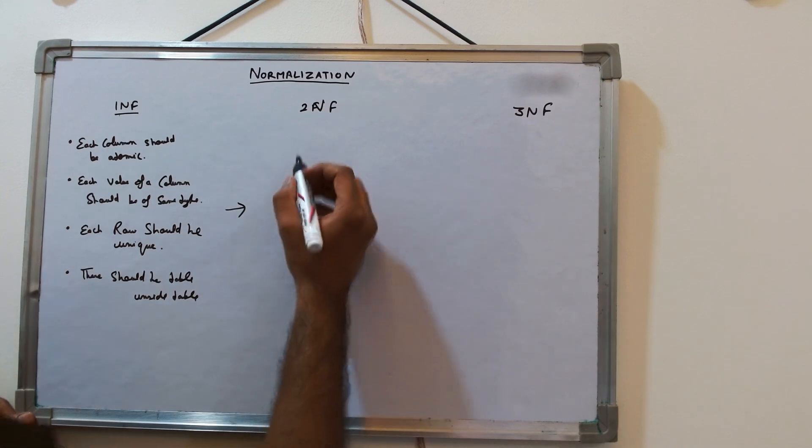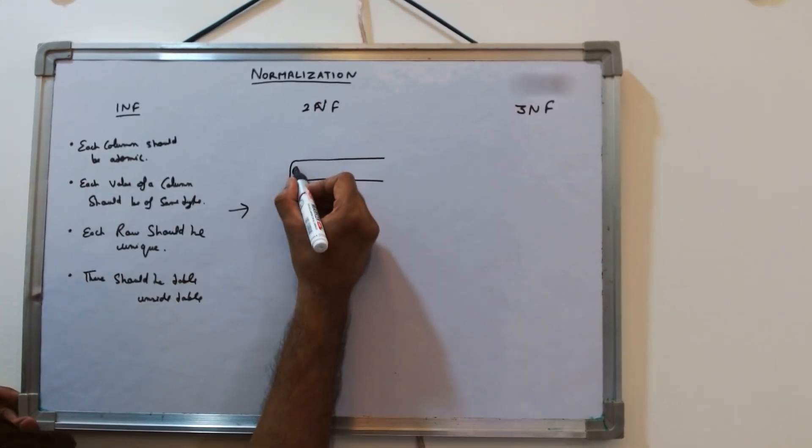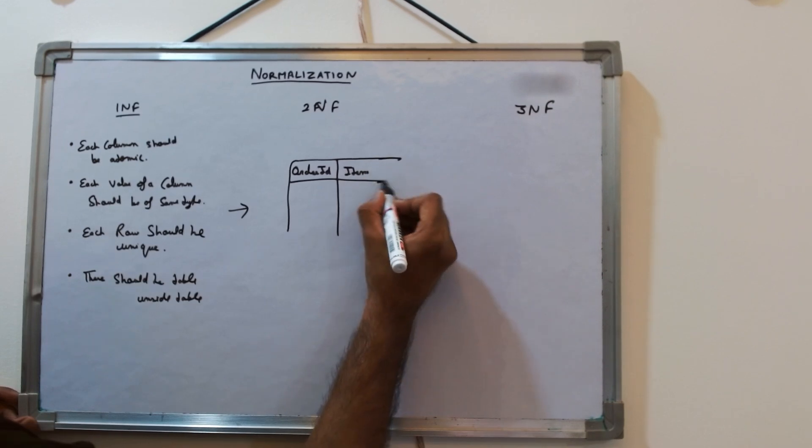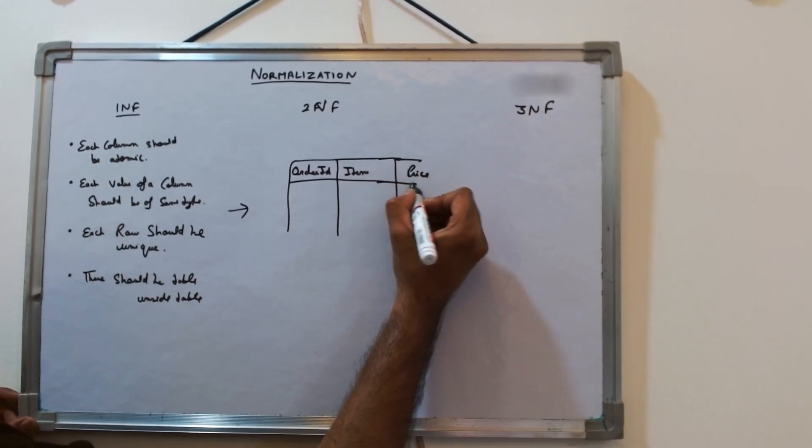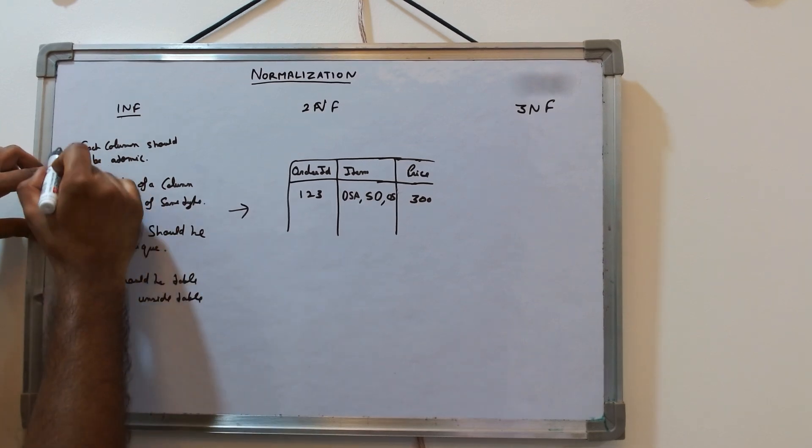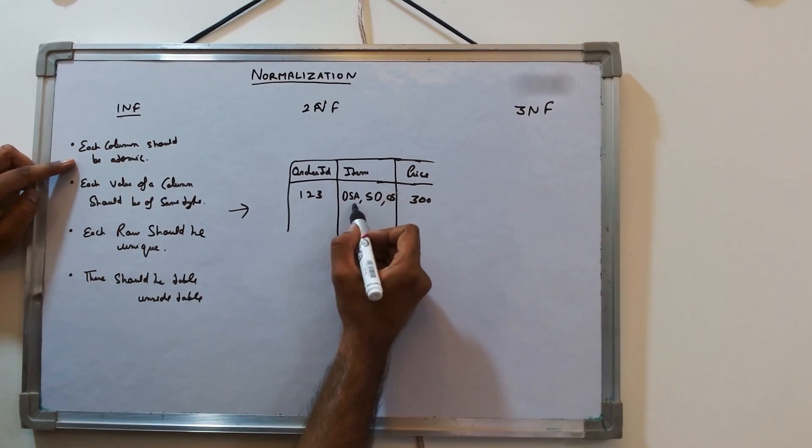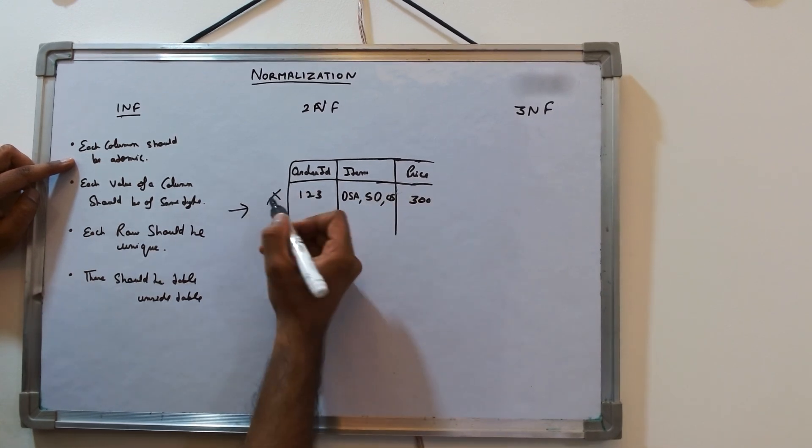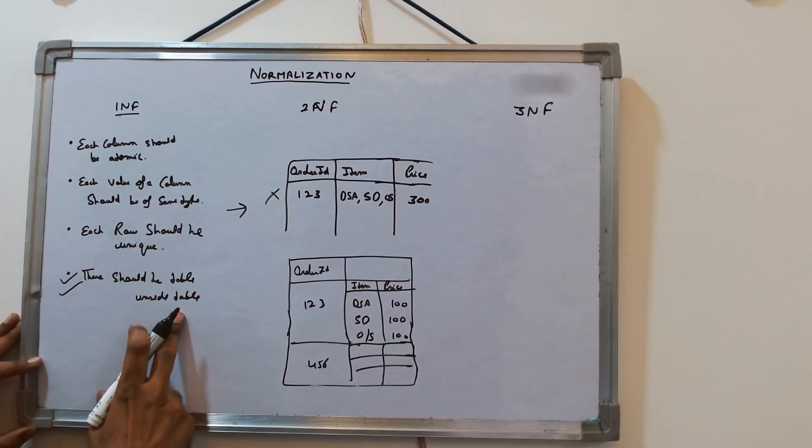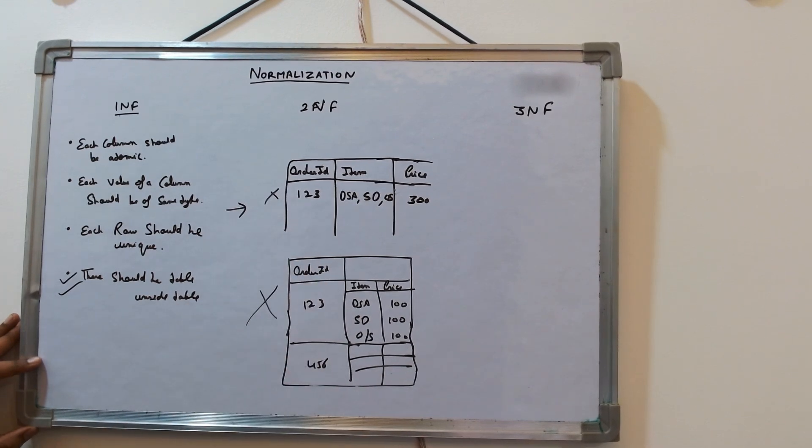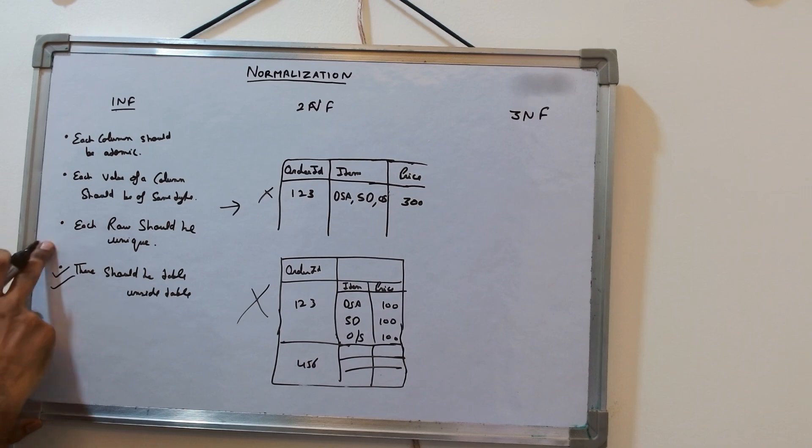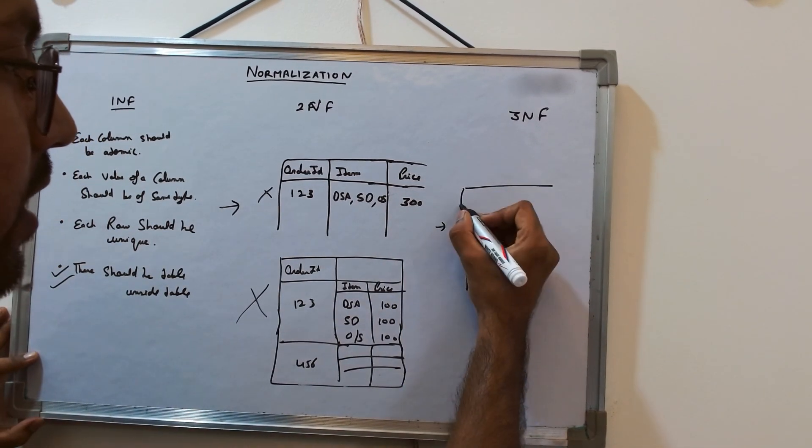Let's take this example. Let's say we have one column called order ID, then we have item, then we have price. So one thing is each column should be atomic. Is this atomic? No, each column has multiple values here, so this is not fulfilling the first point itself. It is like table inside a table, so this is also not justifying the 1NF. To make this in 1NF, we have to fulfill all the criteria.